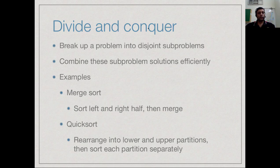We have seen two examples of divide and conquer. Merge sort is a classic example where we divide the list to be sorted into two equal parts, sort these two parts separately, and then efficiently merge them into a sorted list.